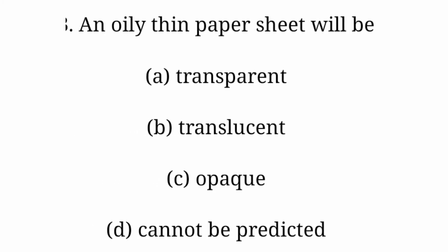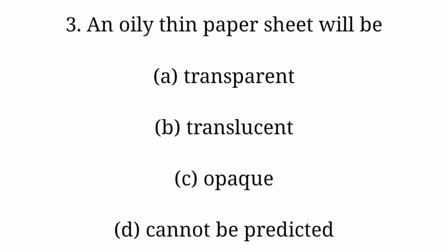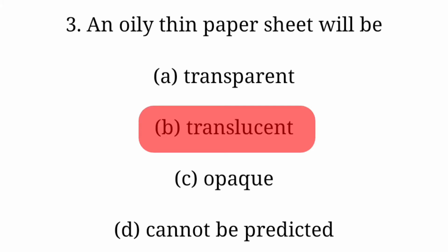Question 3: An oily thin paper sheet will be? Option A: Transparent. Option B: Translucent. Option C: Opaque. Option D: Cannot be predicted. Answer is Option B: Translucent.